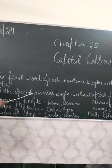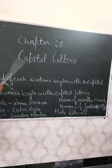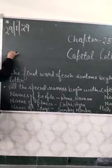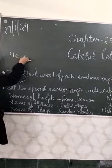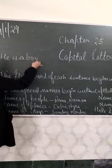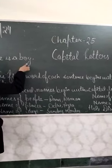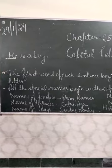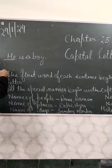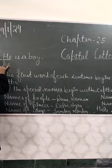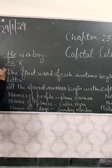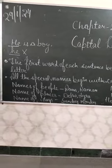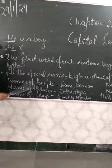The first word of each sentence begins with a capital letter. Suppose I am going to write here a sentence: 'He is a boy.' So you can see I have written it with a capital. If I write it without a capital, it will be incorrect. So children, always keep in your mind you have to write a sentence with a capital letter.